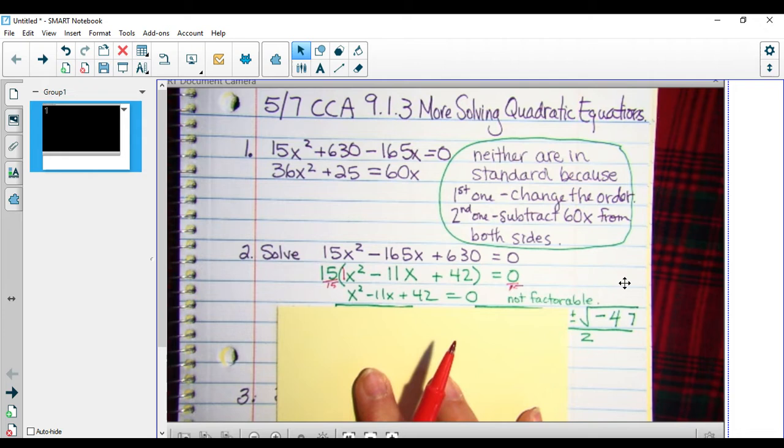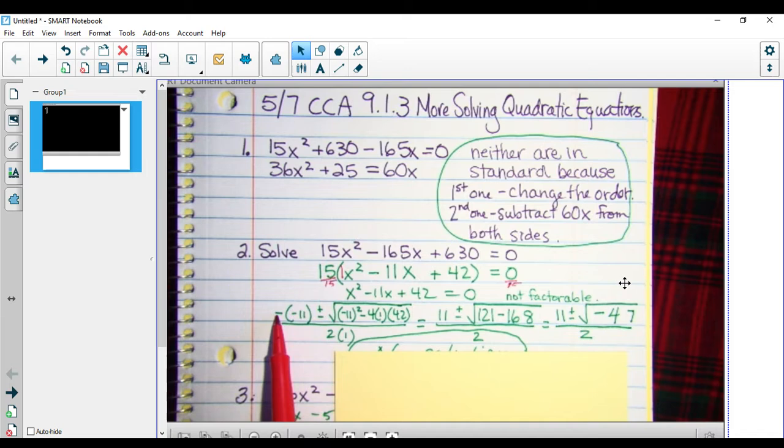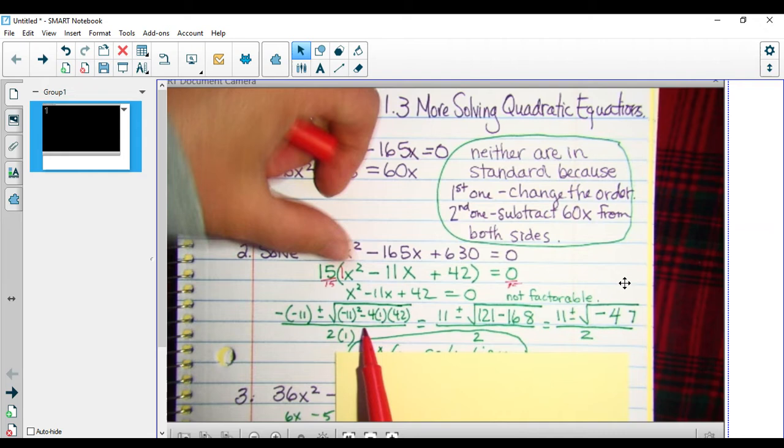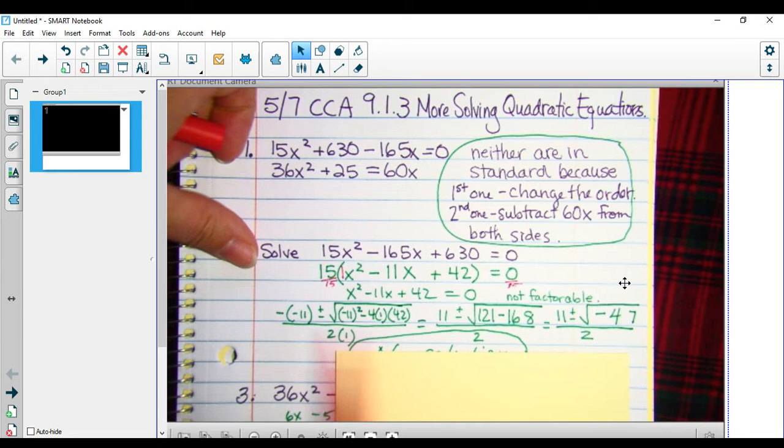I'm going to substitute in my values. I get the opposite of negative 11 plus or minus the square root of negative 11 squared minus 4 times a, 1, times c, 42, all divided by 2 times a is 1.